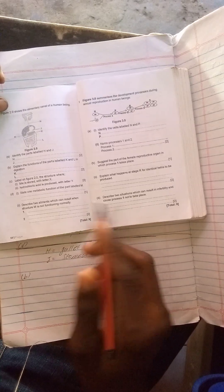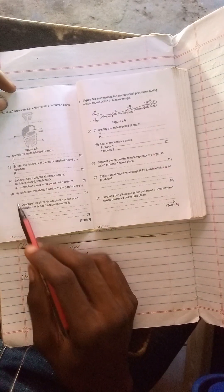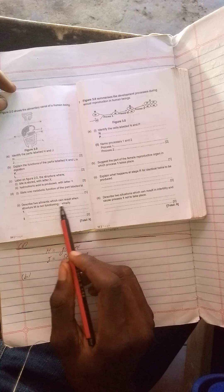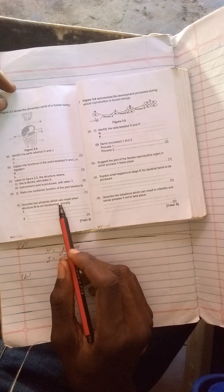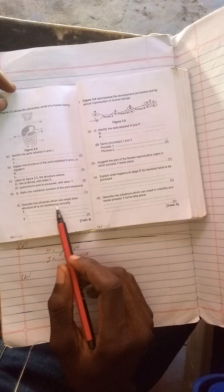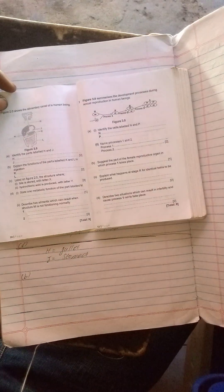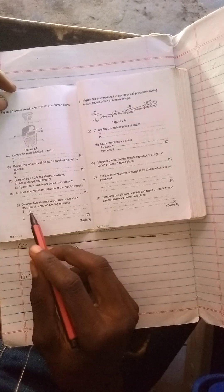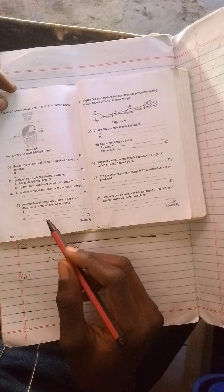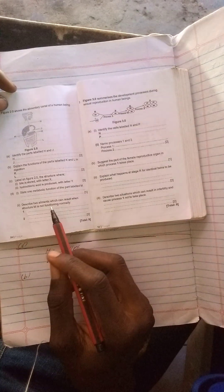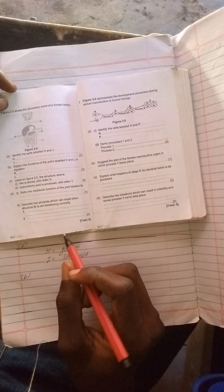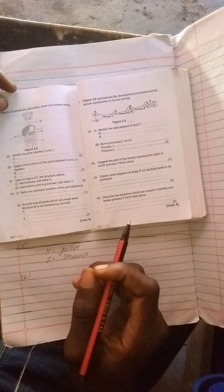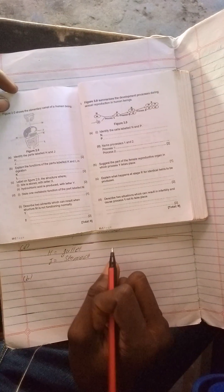Question D2: describe two ailments which can result when structure M is not functioning normally. The first ailment is you can have low blood sugar levels. Second one is you can have high blood sugar levels.